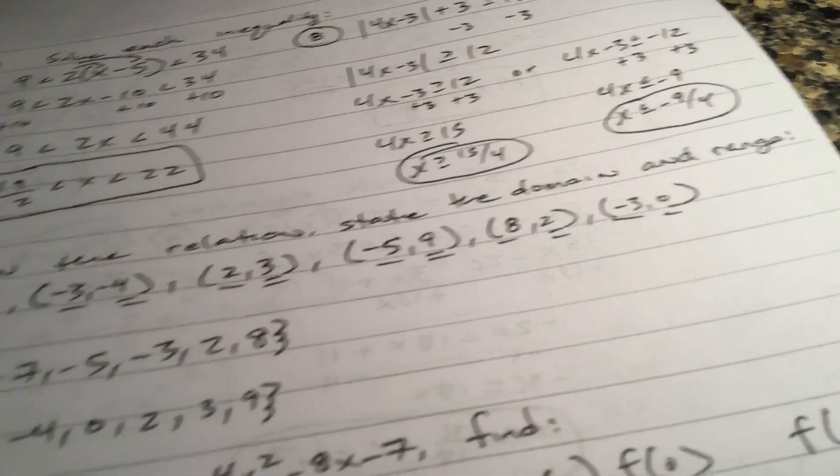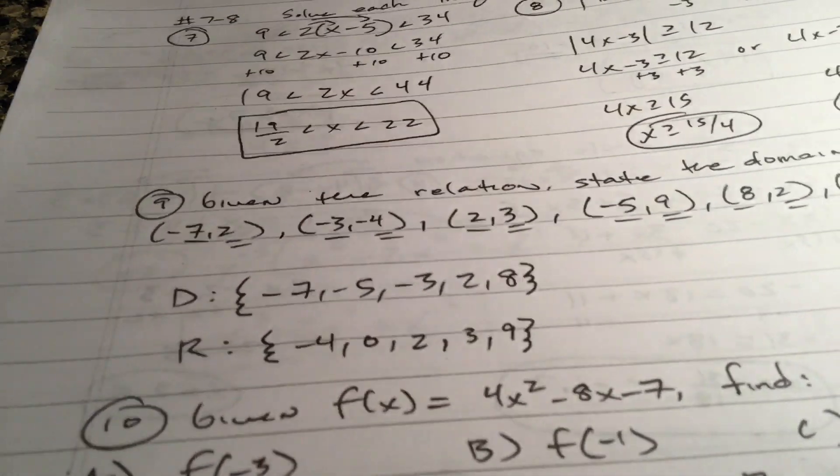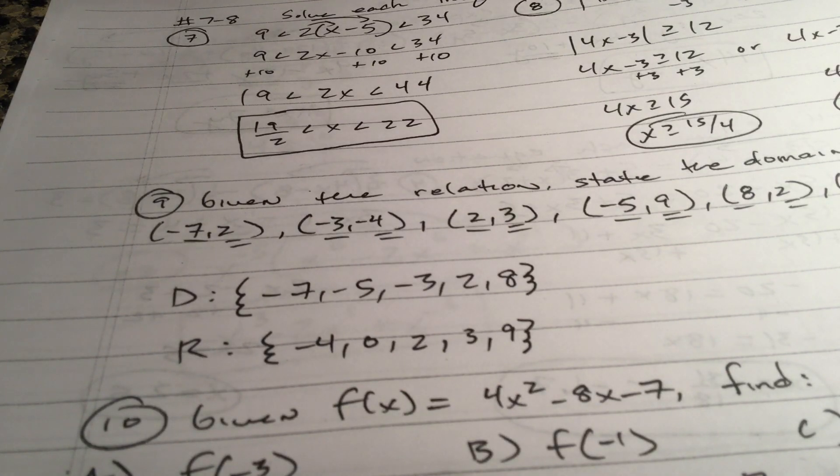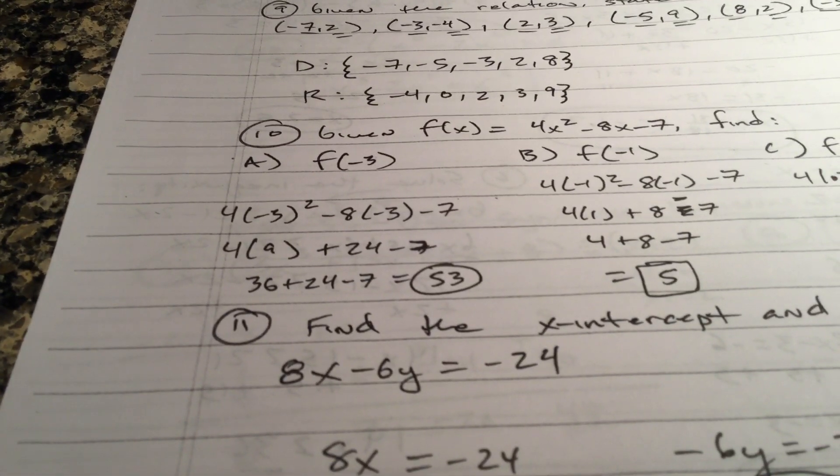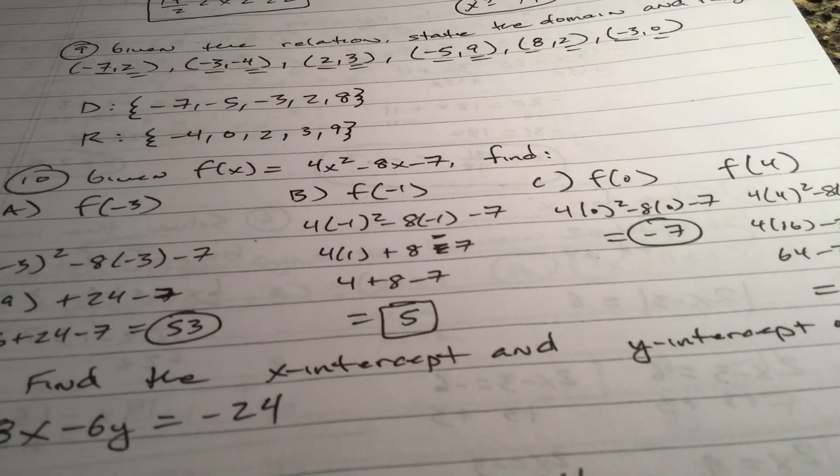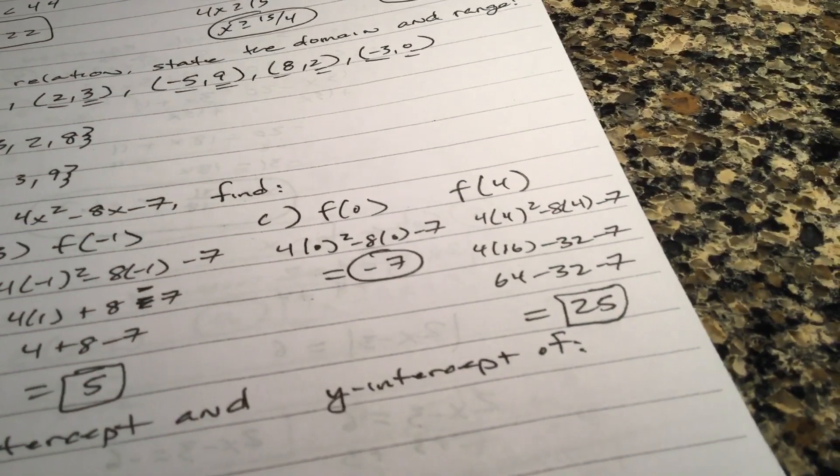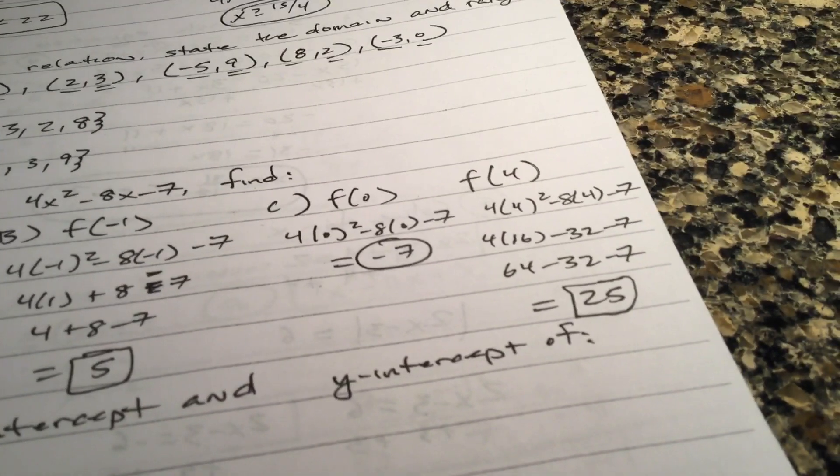Given the relation, save the domain and range. The domains are the x values. Please put them in order, at least the greatest. If you see duplicates, just write it once. Range is all the y values. Please put them in order, at least the greatest. It just means plug negative three in for x. Tell me what you get. Plug negative one in for x. Tell me what you get. Plug zero in for x. That should be pretty easy. Plug four in for x. Tell me what you get.